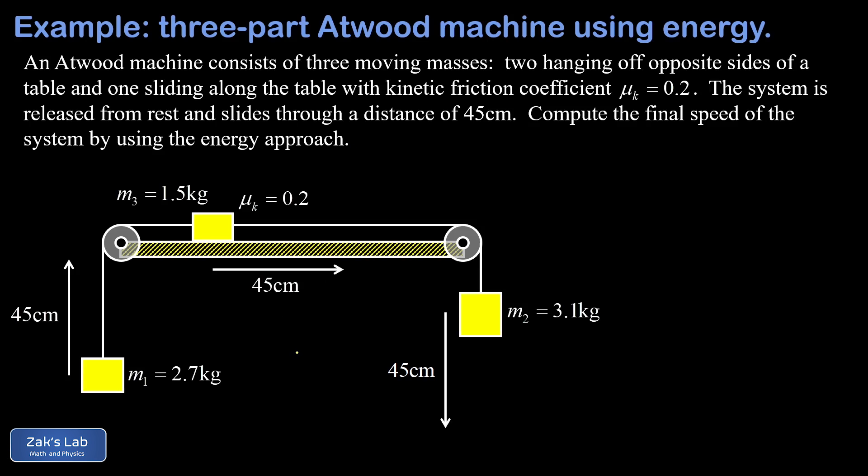To quickly summarize the energies in this problem: the hanging mass on the left, m1, experiences an increase in gravitational potential energy. The hanging mass on the right, m2, is falling downward because it's the heavier mass, so it experiences a decrease in gravitational potential energy. We don't consider the gravitational potential energy of the sliding mass at all because its height stays the same. However, there is a friction force pointing to the left as the mass slides to the right, and that friction force will do negative work on the system.